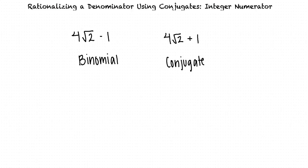Okay, that makes sense, but how do conjugates help us rationalize denominators? To rationalize a denominator is to write an equivalent fraction without radicals in the denominator.